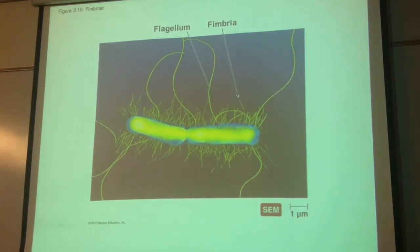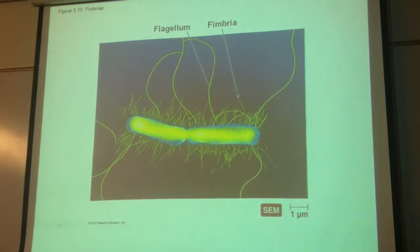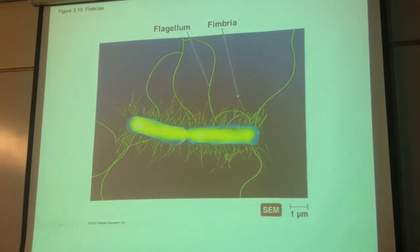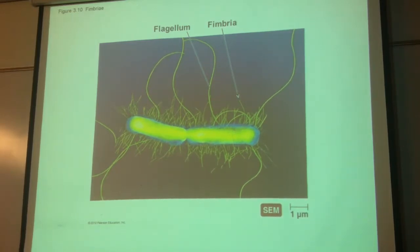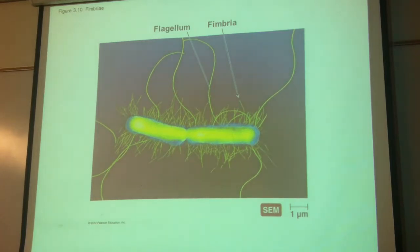How many pili are you going to have per cell? Probably one or two. You need to think about need. You need to move, so you'll have either one strong flagellum or a bunch. You need to adhere to things, so you'll have a lot of fimbriae. You don't really need to be transferring DNA that often, so you'll only need one or two pili.